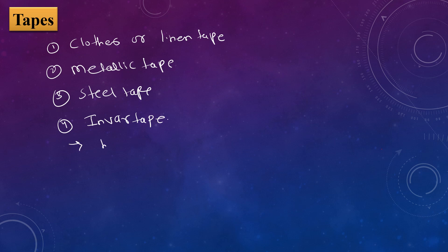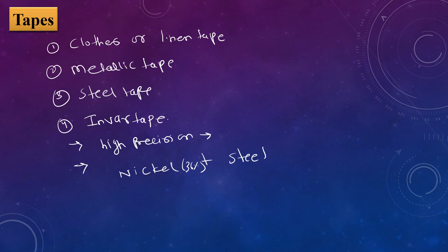The invar tape has a high degree of precision. More accuracy is acquired when we use the invar tape for horizontal distance calculation. This invar tape is formed by nickel (36%) and steel (64%).